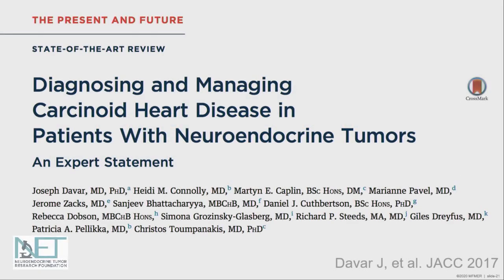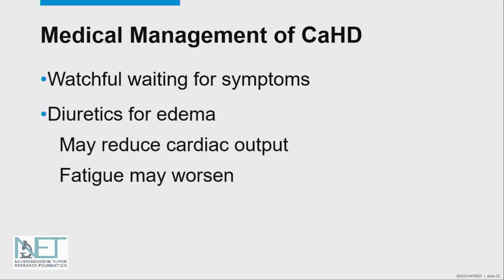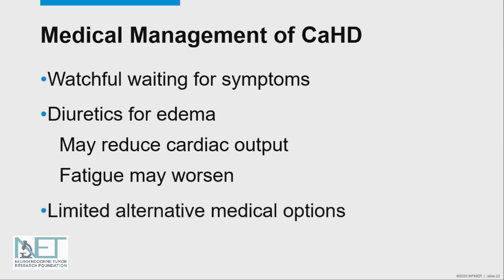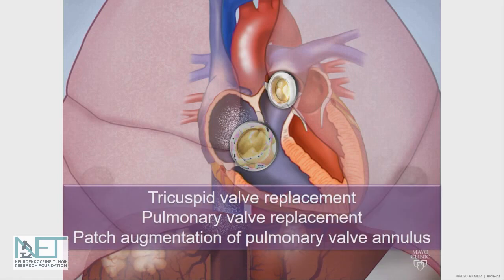That brings us to management. There's a lot of detail in this reference, but let me give you the Cliff Notes version. Watchful waiting for symptoms is what we tend to do. If individuals have developed some swelling, it's reasonable to try a diuretic or a water pill to see if that results in improvement in symptoms, but it generally doesn't help with fatigue or breathlessness — it just helps with the swelling. There are very limited alternative medical options available. For the patient who has developed severe leakage of one or both valves, the treatment of choice really is surgical valve replacement. Surgery is the only option for the individual who's not had previous valve replacement.